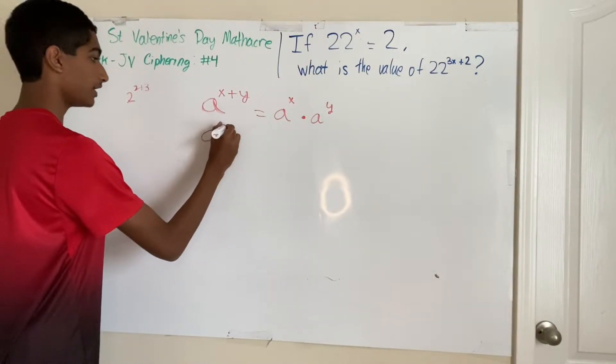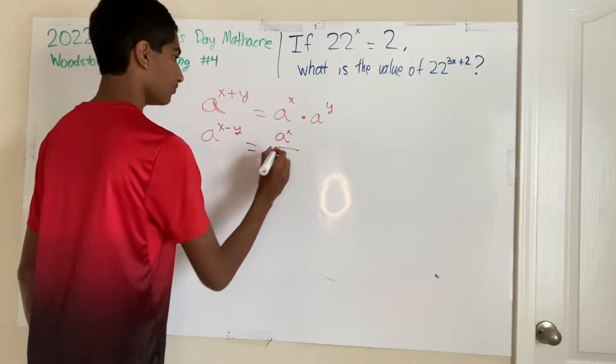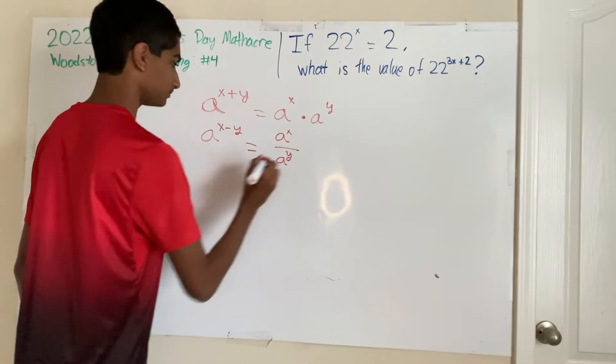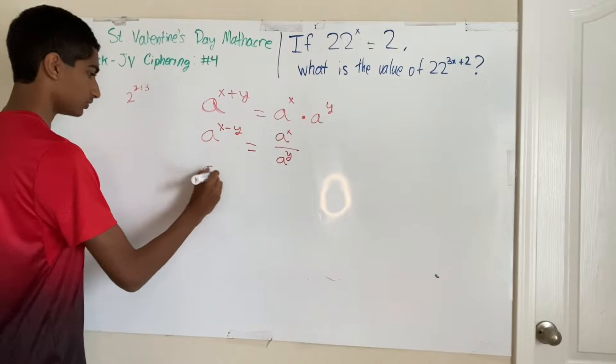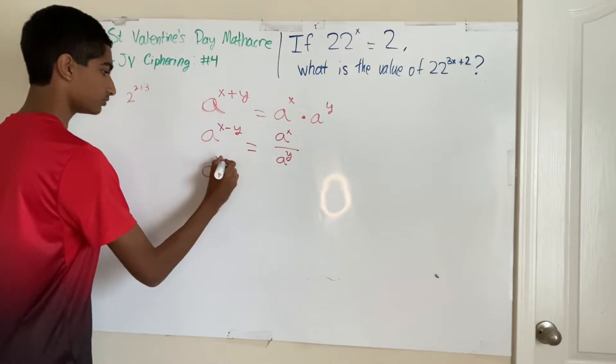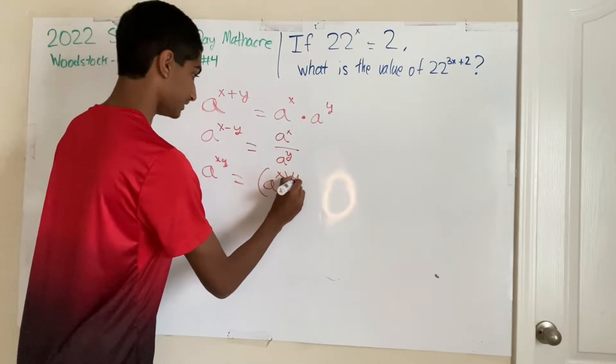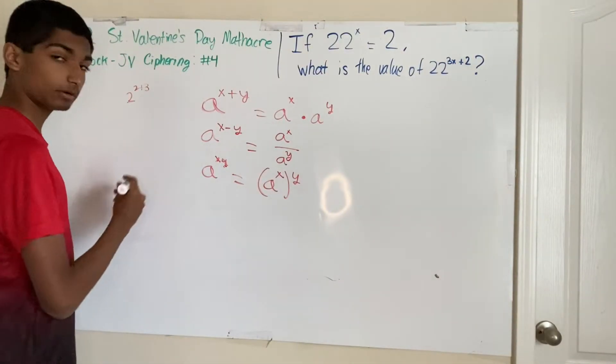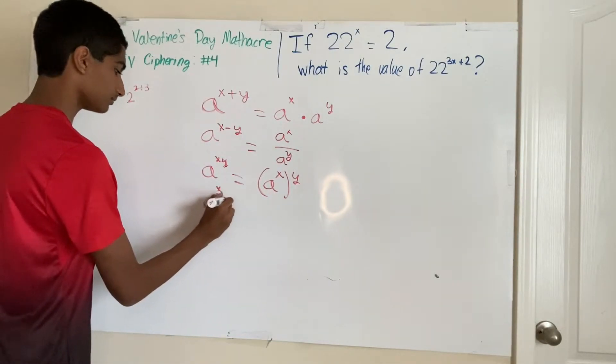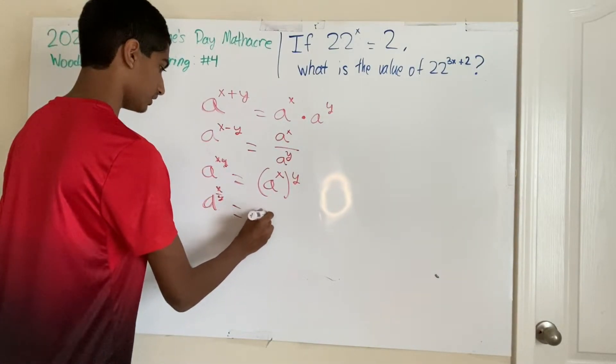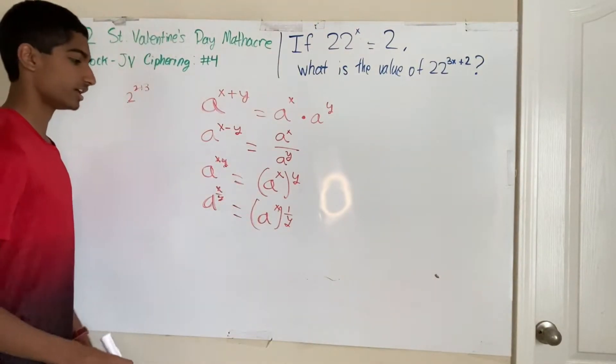a to the power of x minus y is equal to a to the x over a to the y. Right? Straightforward stuff. And we also have a to the power of xy is equal to a to the power of x, y times. And the same goes for a to the x over y. And that's a to the power of x, 1 over y times. Or you can flip it later.